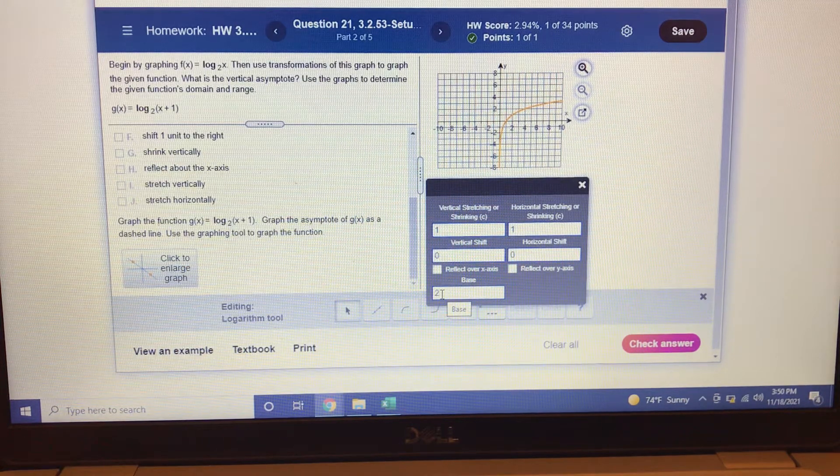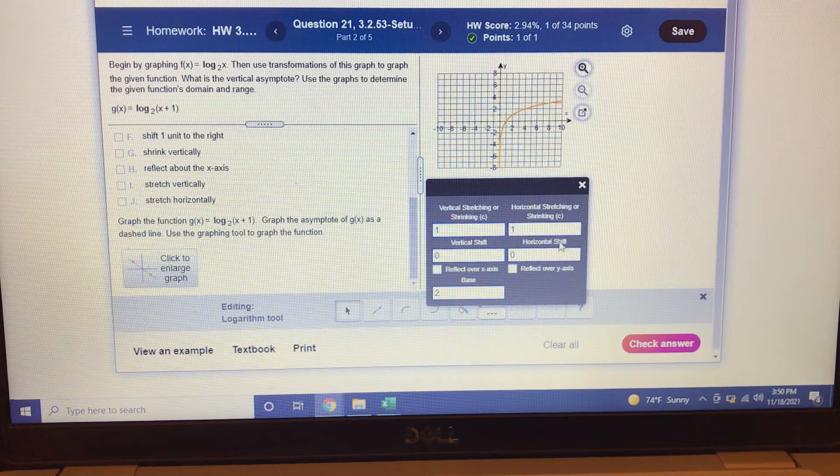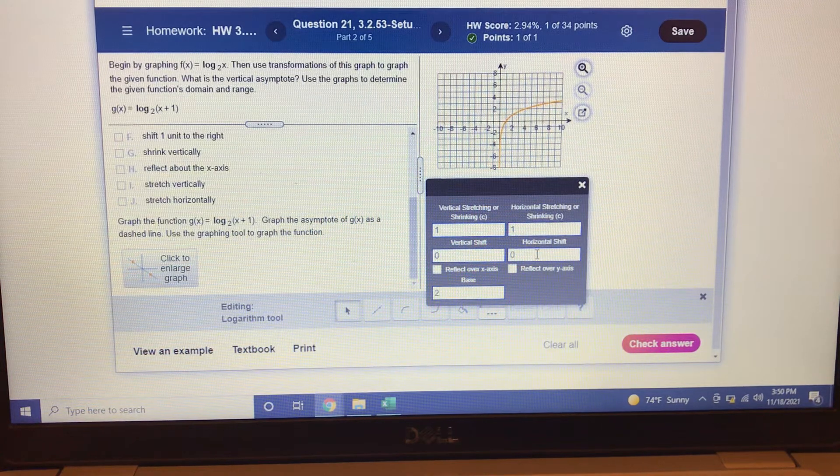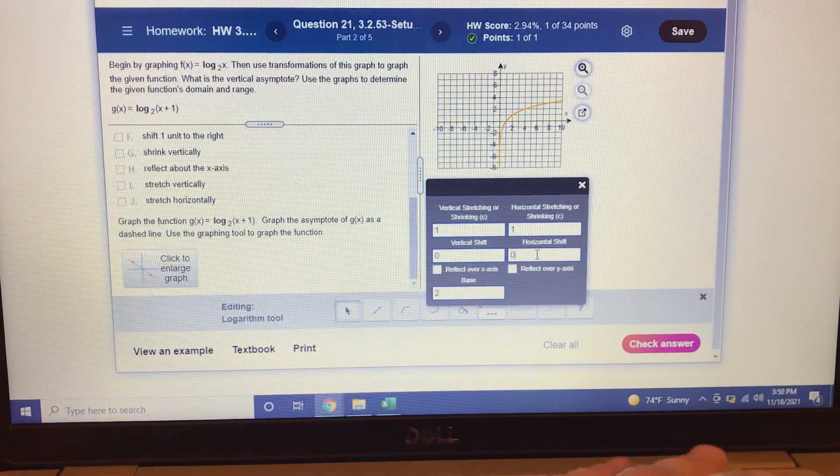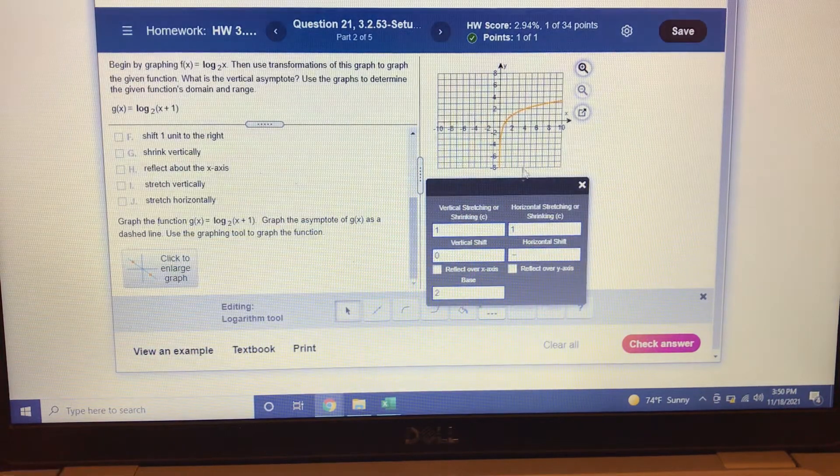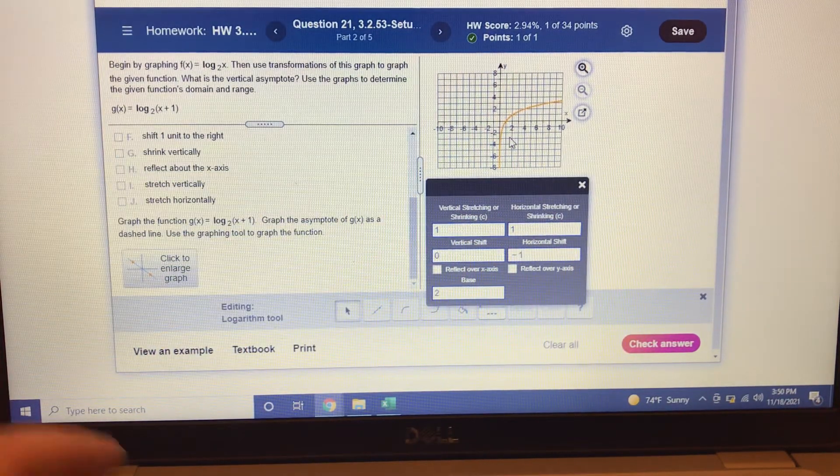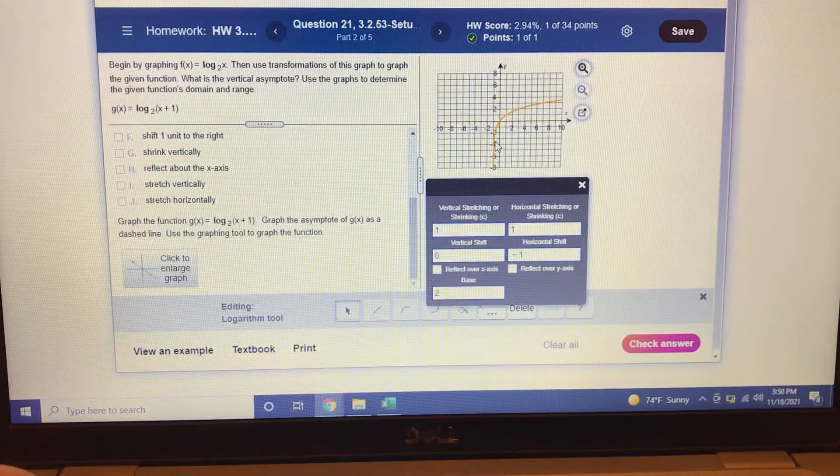And now we have to shift it one unit to the left. So that is going to be a horizontal shift. And we're going to go 1 to the left. So that's a negative 1. And then watch the graph move. See it move 1 to the left?